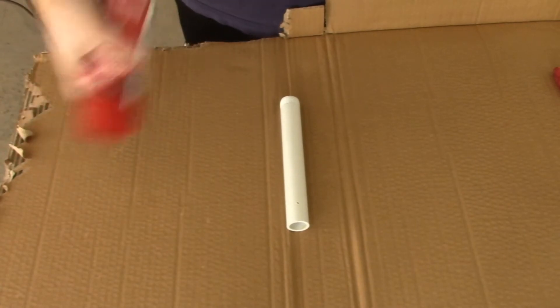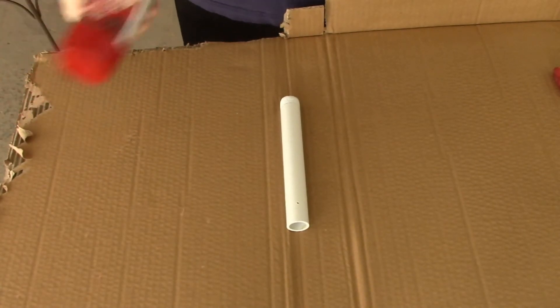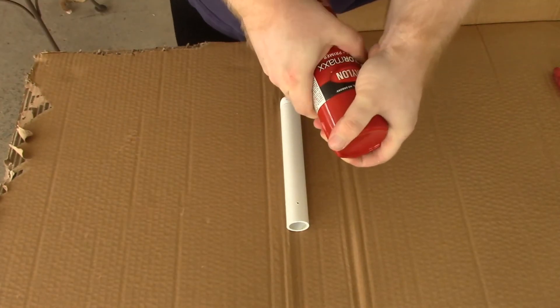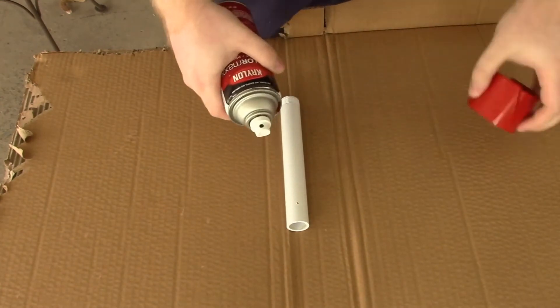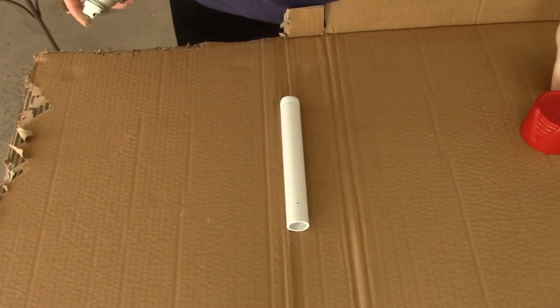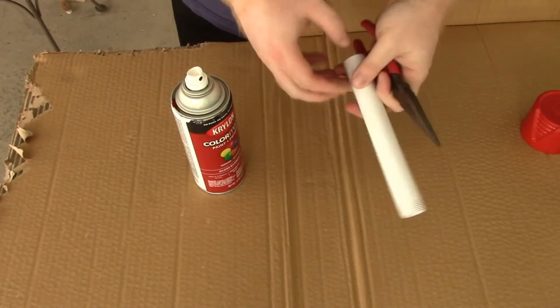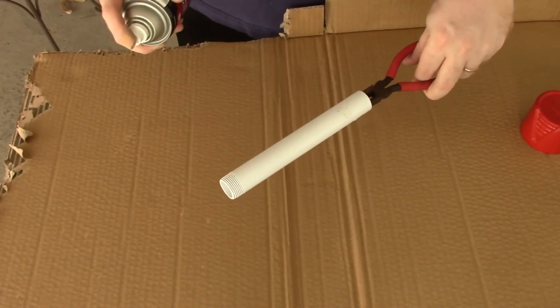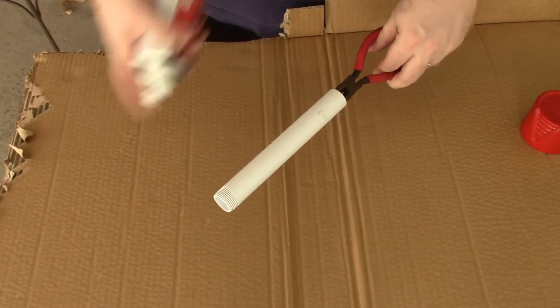If you're using spray paint like me, start by shaking your can well to mix all the components together. Here you can take a lesson from my mistake. Before painting, you will want to cover the threads of your pipe with tape. I didn't do this, and my cap is much harder to take off with two layers of paint in the threads.